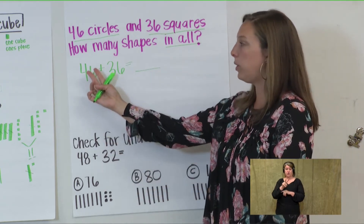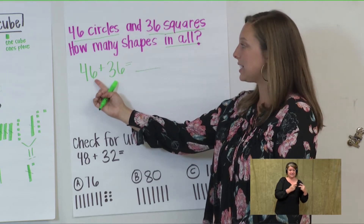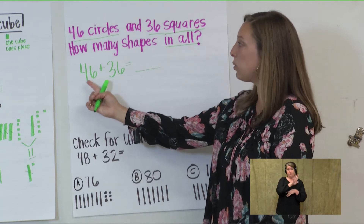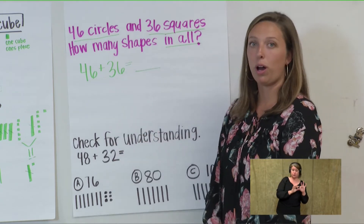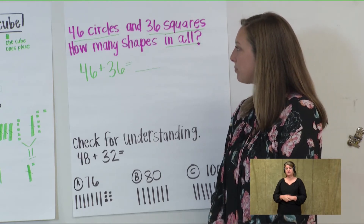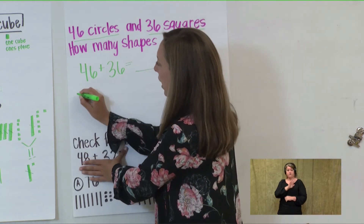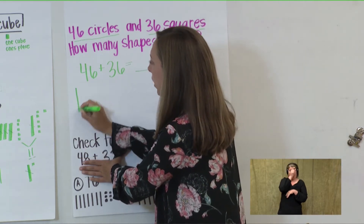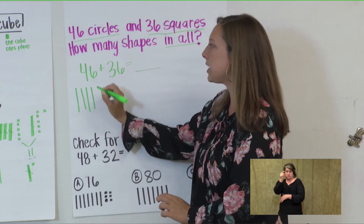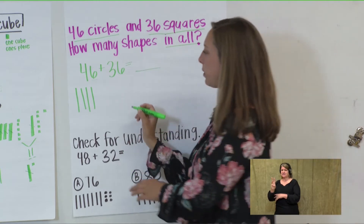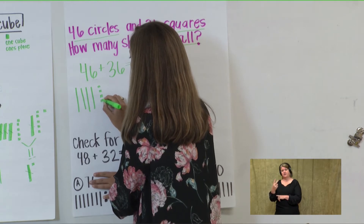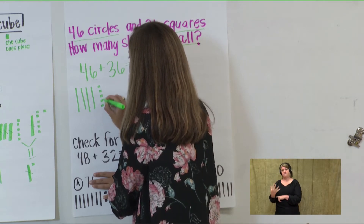Look at the two digits. You have a 4 in the tens place and a 6 in the ones place. Remember when you draw your 4 and your 6, what place value do they hold — would it be a rod or would it be a cube? For 46 we have four rods: 1, 2, 3, 4 rods and six cubes — 6 is in the ones place: 1, 2, 3, 4, 5, 6.